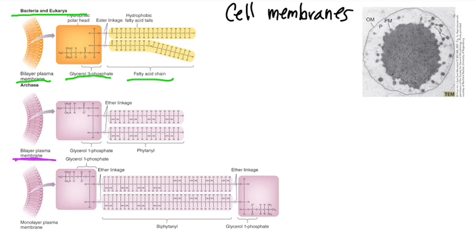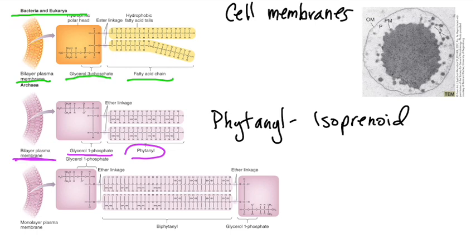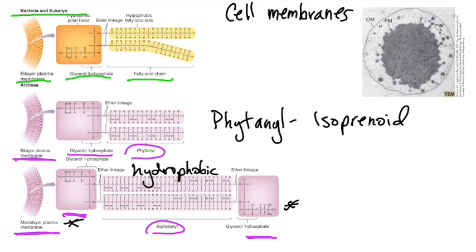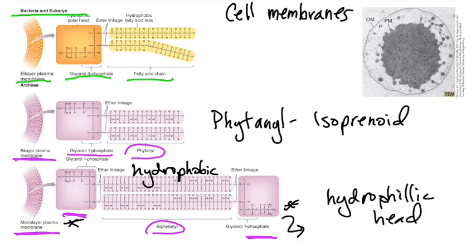The archaea can have a couple of different makeups to their plasma membrane. They can have a lipid bilayer, but it's structurally different — so instead of a glycerol 3-phosphate, it's a glycerol 1-phosphate, and instead of a fatty acid chain, the molecule phytanyl is an isoprenoid. Some archaeons have even stranger cell membranes — rather than being a lipid bilayer, they can actually be a monolayer plasma membrane. In this case, we have glycerol 1-phosphate at each end with a biphytanyl in the middle, giving a hydrophobic region in the middle and hydrophilic heads on each end.